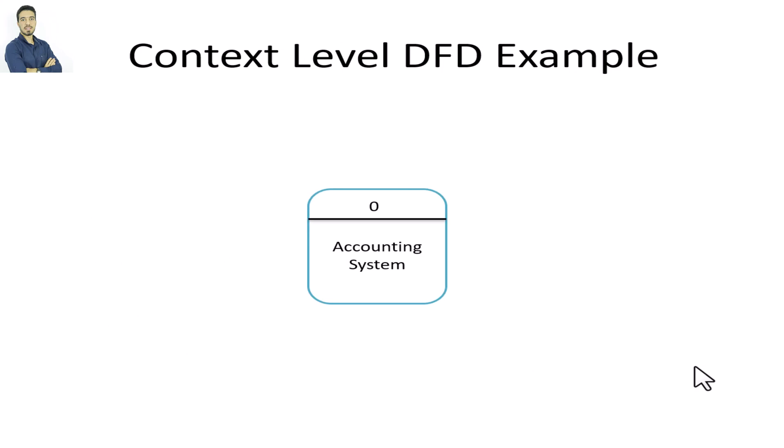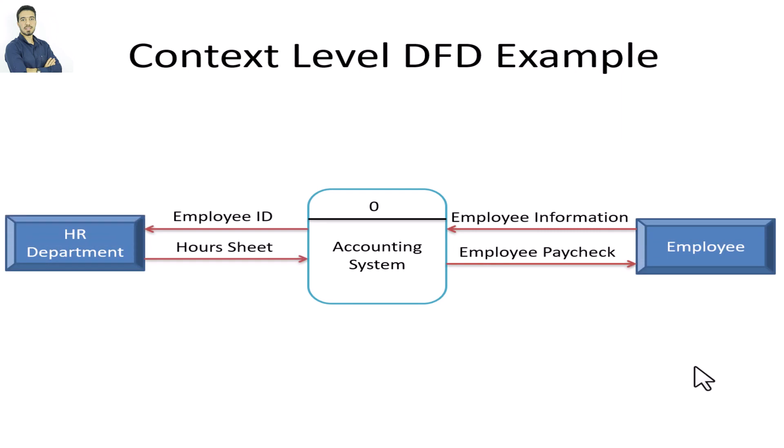Let's build our own DFD. Our example is an accounting system that deals with two external entities: the employee, who receives a salary from the system, and the HR department, which provides the system with employee information and hours sheet so the system can calculate the employee's salary.